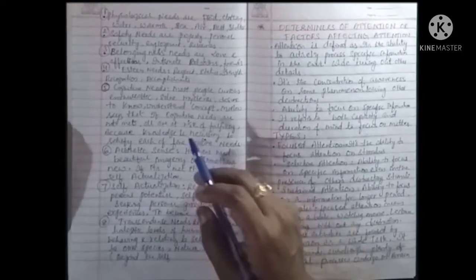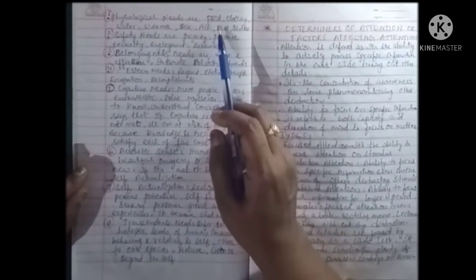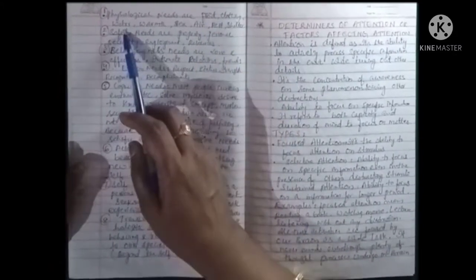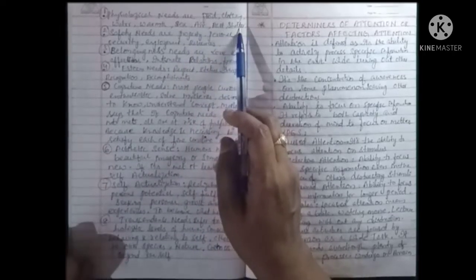Coming to each level with examples, the physiological needs are food, clothing, water, warmth, sex, air, rest, and shelter.